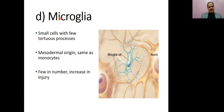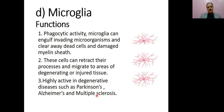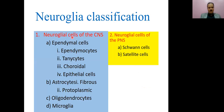Microglia — 'micro' meaning small — are small glial cells with few tortuous processes. They are mesodermal in origin, same as monocytes. Just as monocytes give rise to macrophages with phagocytic function, microglia in the brain have a phagocytic function. They can engulf microorganisms and clear away dead and damaged cells and myelin sheath debris. These cells can retract their processes and migrate to areas of degenerating or injured tissue — for example, in Alzheimer's disease or multiple sclerosis.